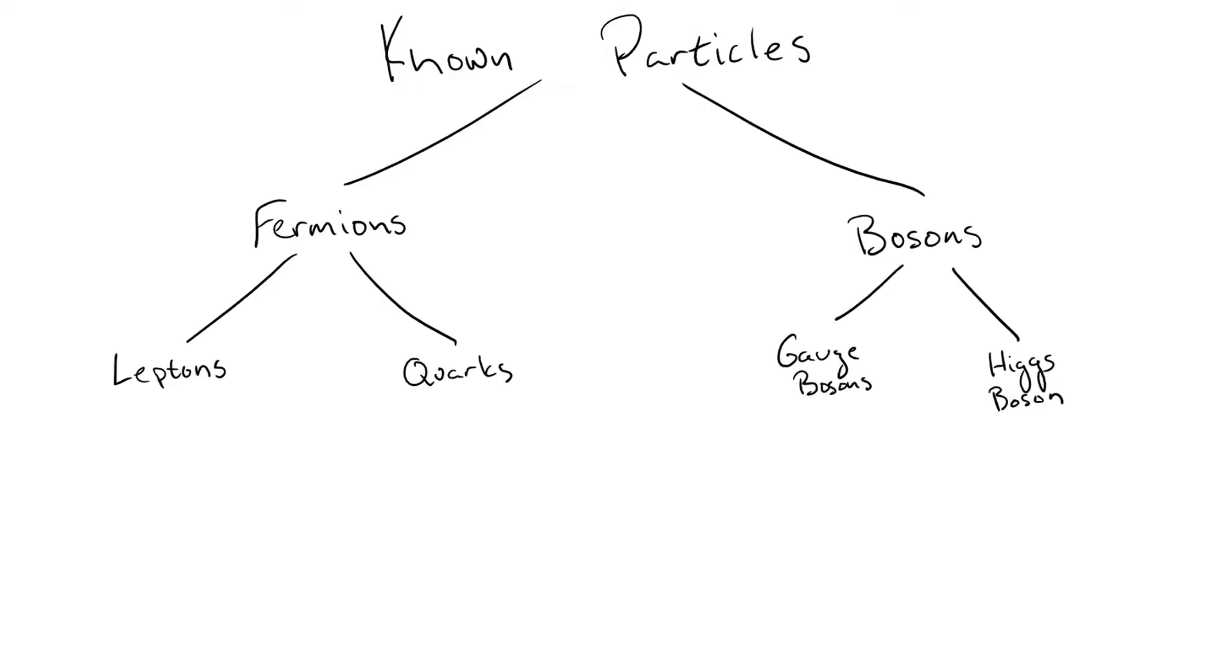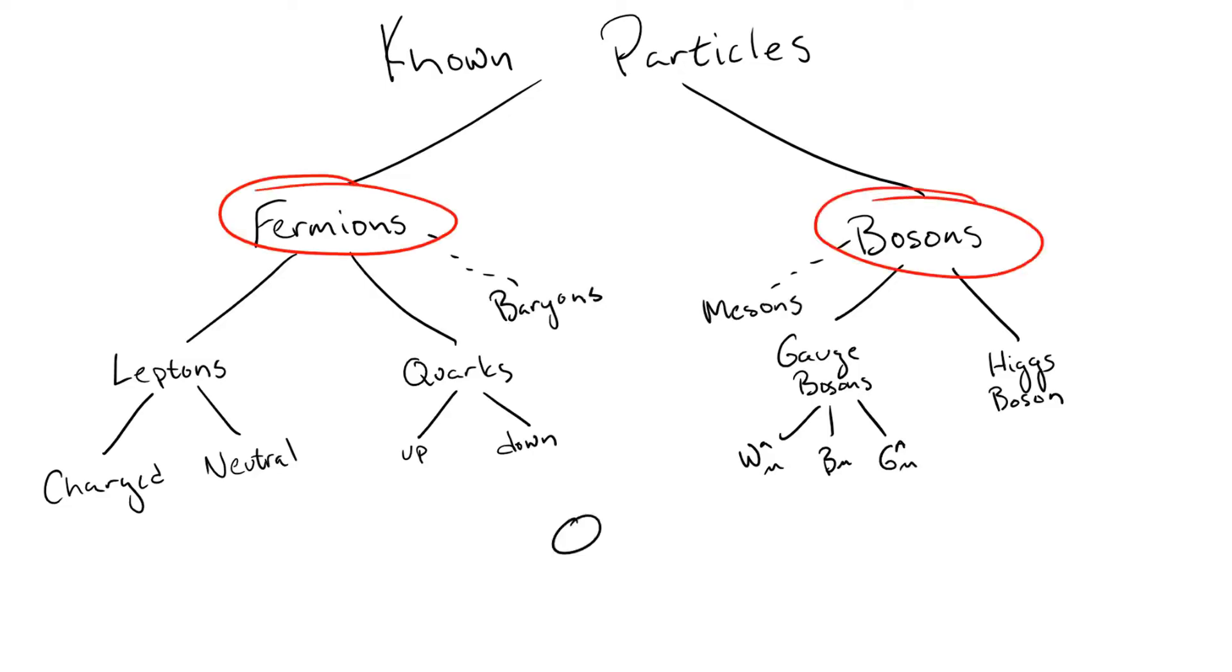Some examples of fermions are electrons, muons, quarks, protons, neutrons, and neutrinos, while bosons are particles like photons, gluons, pions, and the Higgs.